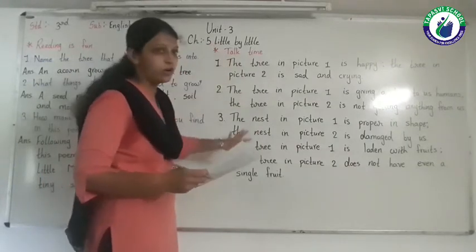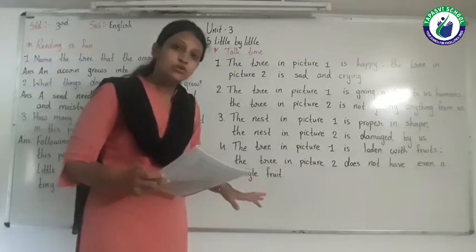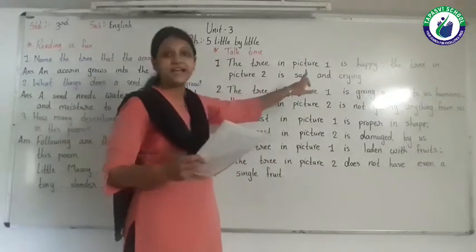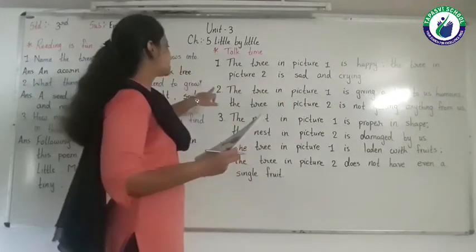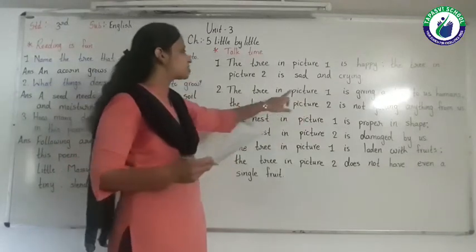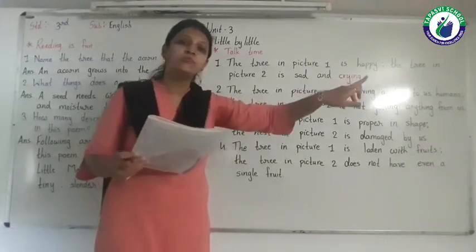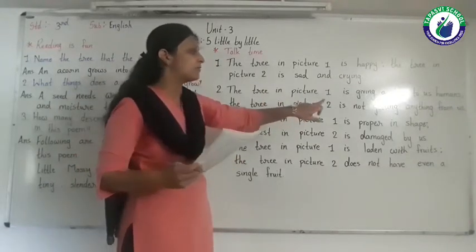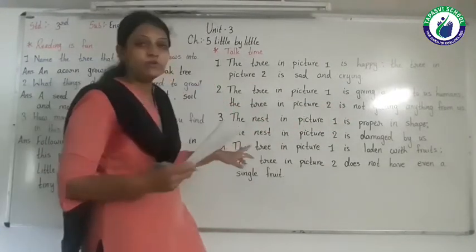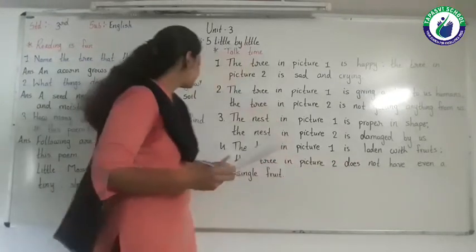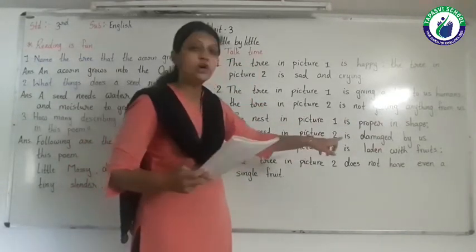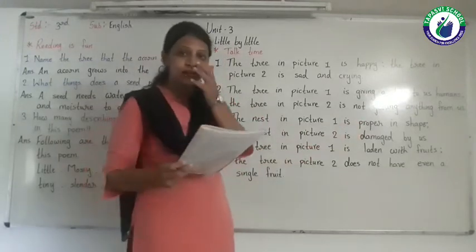Now I repeat all four differences between the two trees. Difference 1: The tree in picture one is happy; the tree in picture two is sad and crying. Difference 2: The tree in picture one is giving a lot to us humans; the tree in picture two is not getting anything from us. Difference 3: The nest in picture one is proper in shape; the nest in picture two is damaged by us. Difference 4: The tree in picture one is laden with fruits; the tree in picture two does not have even a single fruit.